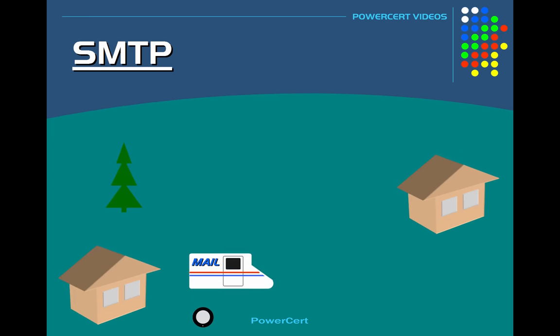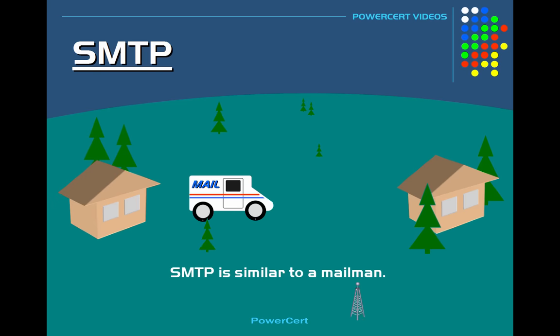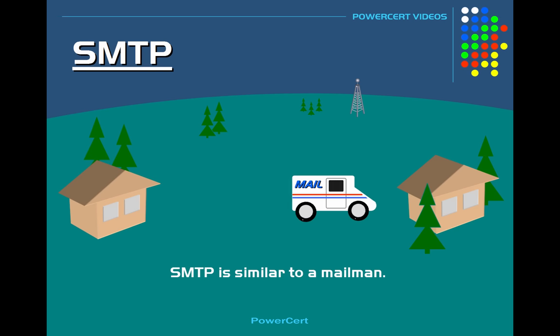In conclusion, SMTP is similar to a mailman. The mailman picks up the mail from your mailbox at your home, finds the correct route, and then delivers it to the destination mailbox.